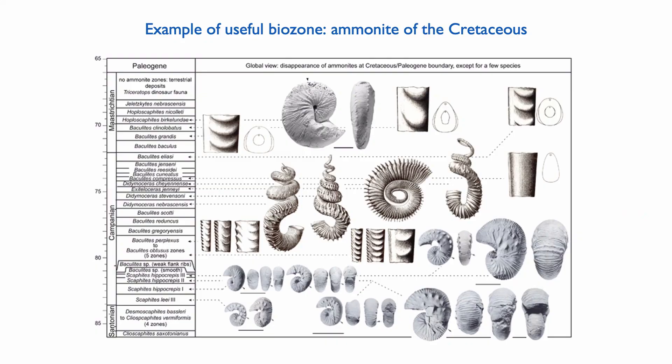Ideally it should evolve rapidly, so it should not have a very long lifespan — it should die relatively rapidly. The ideal candidates for that are planktic species. Free swimmers are ideal candidates for this type of index fossil.